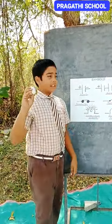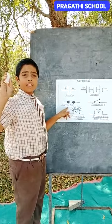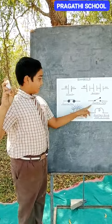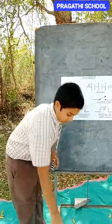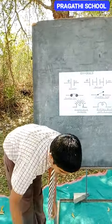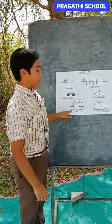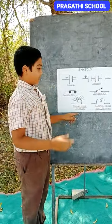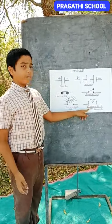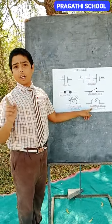This is the symbol of switch on. This is the symbol of switch off. This is the symbol of a bulb that is glowing, and this is the symbol of a bulb that is not glowing.